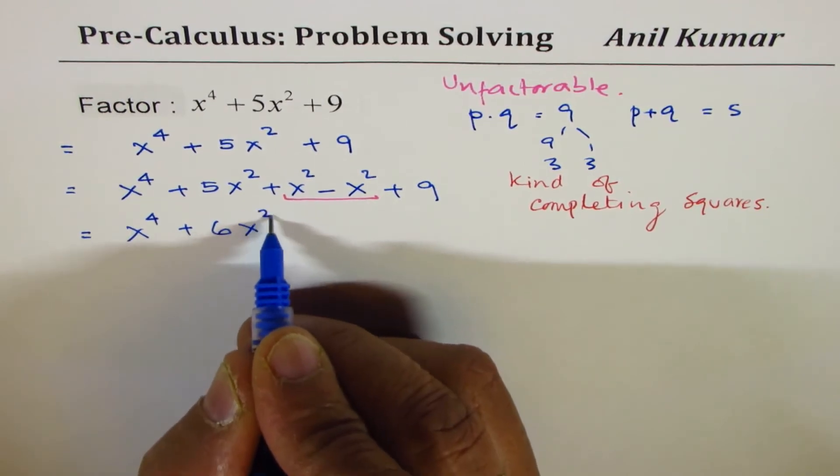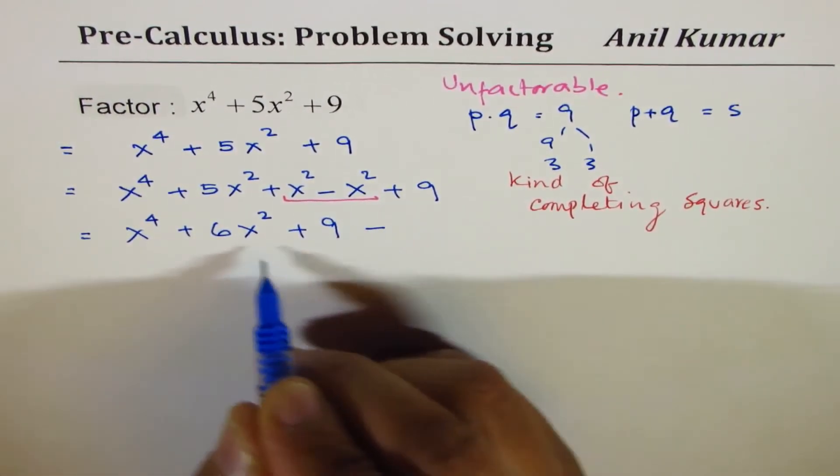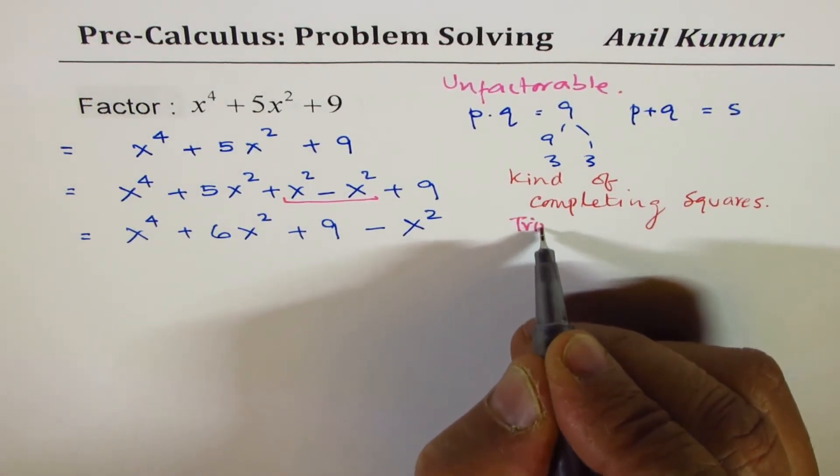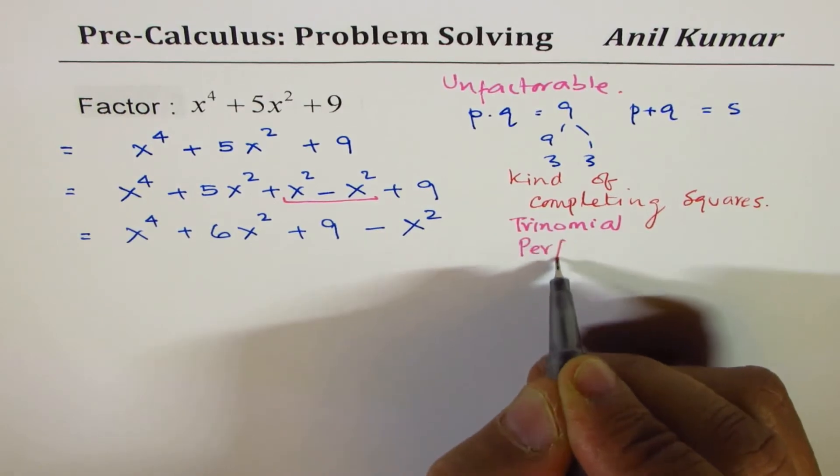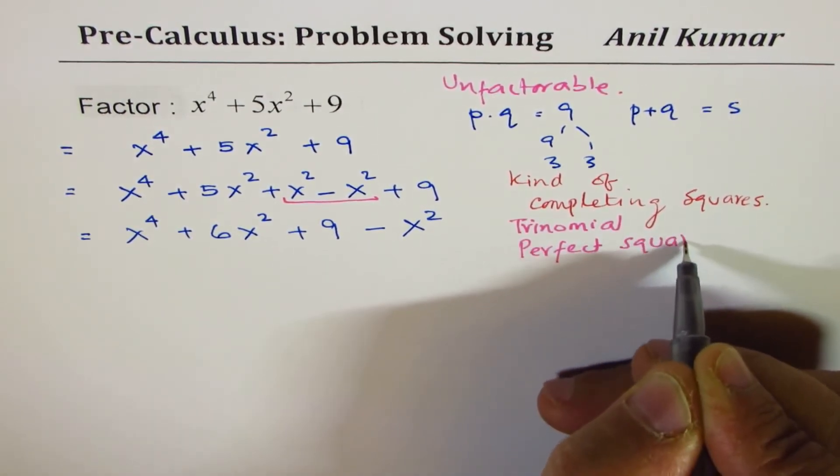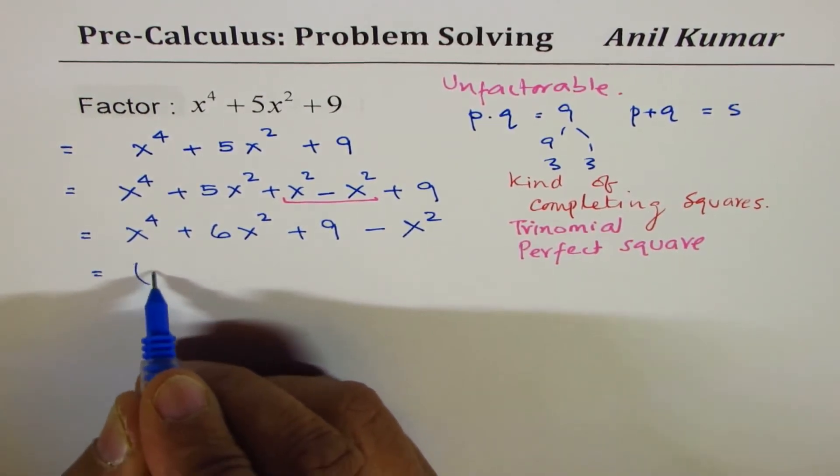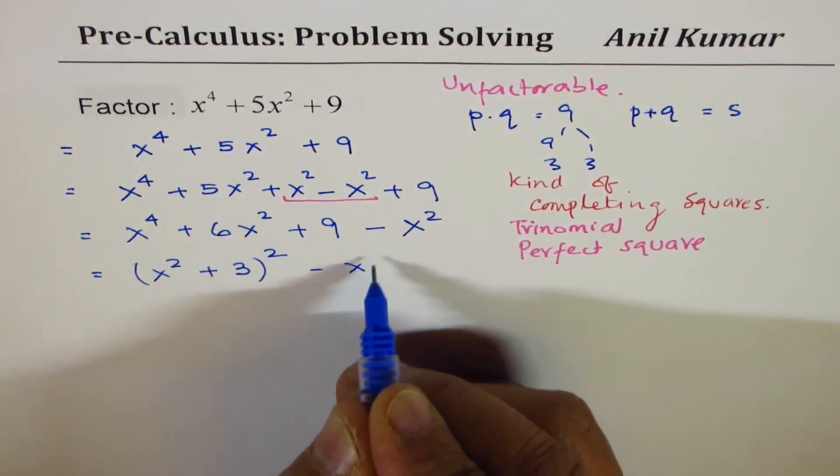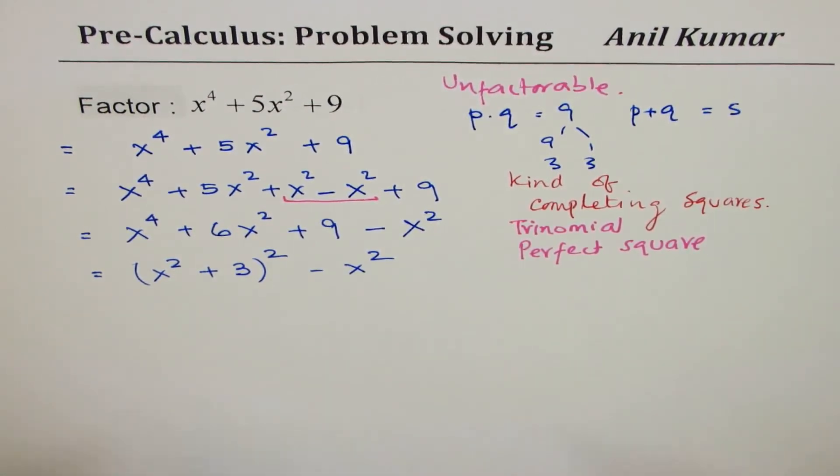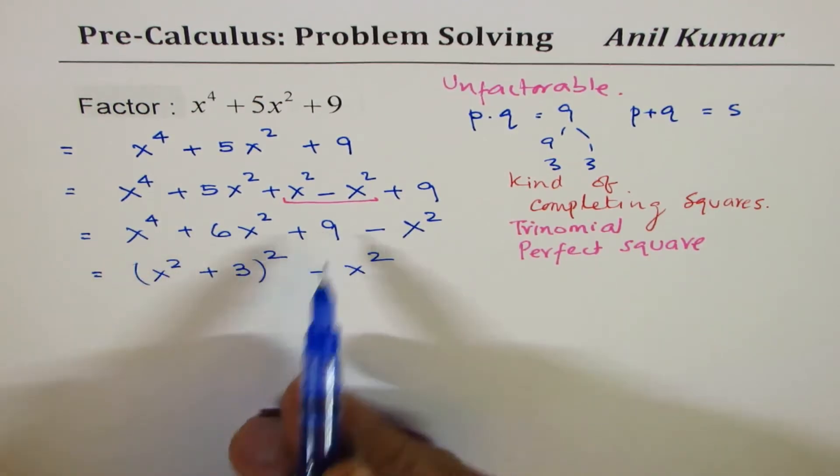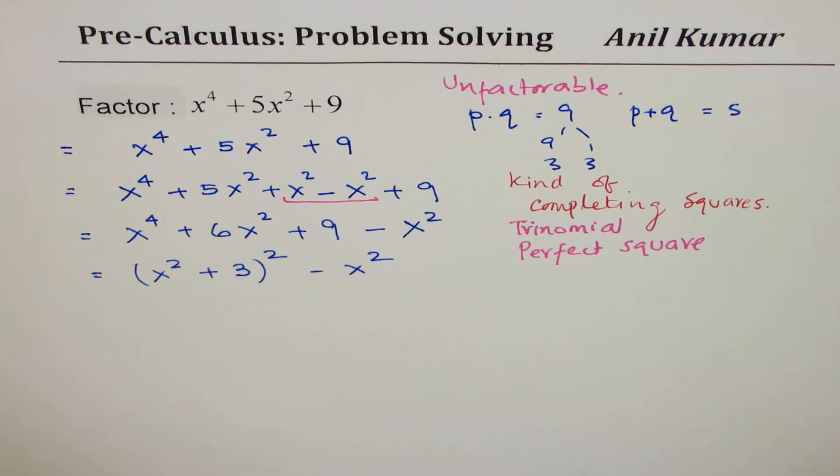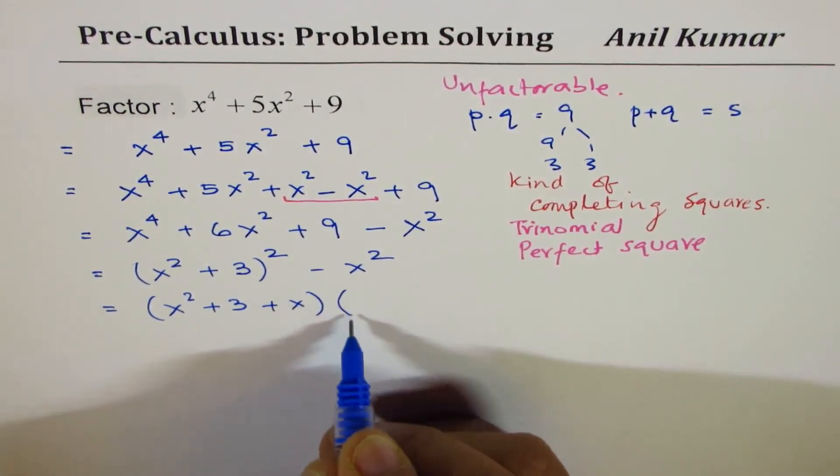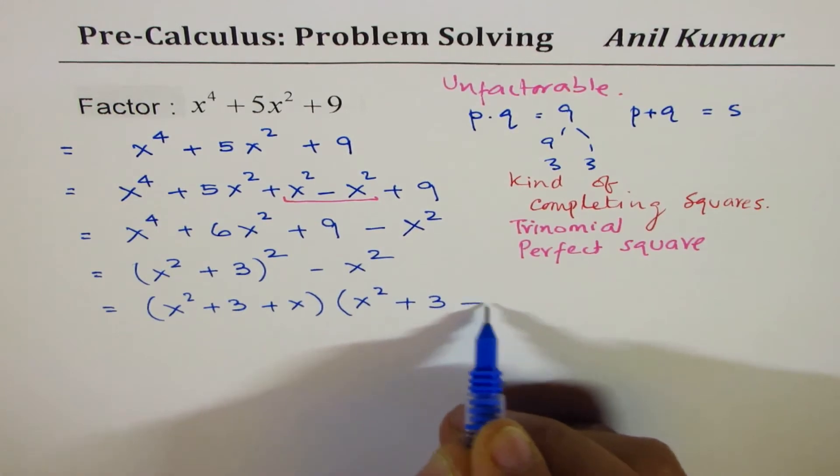It helped me to form a trinomial x⁴ + 6x² + 9 which can be factored as a perfect square. Do you see that? So what we made here, we made a trinomial which is a perfect square. Now we can write this as (x² + 3)². So this trinomial can be written like that and we have -x². If you expand this, what you get is that trinomial. Now we'll apply difference of squares. Beautiful. So we'll apply difference of squares. We get (x² + 3 + x)(x² + 3 - x).